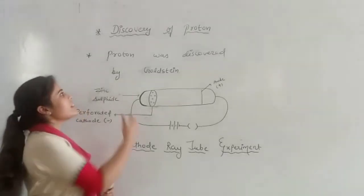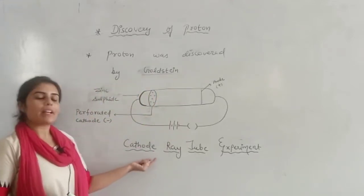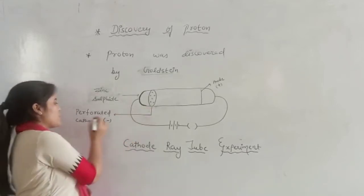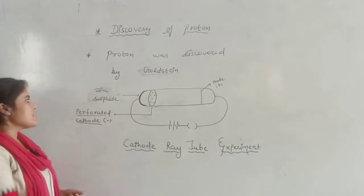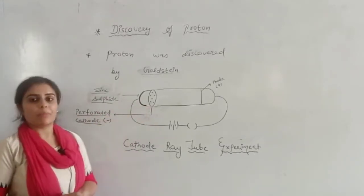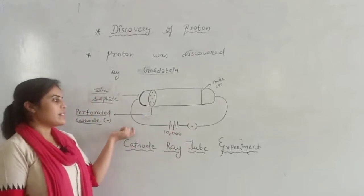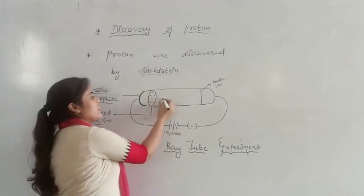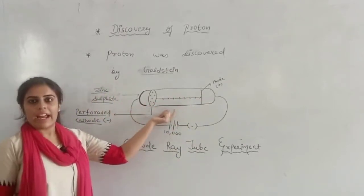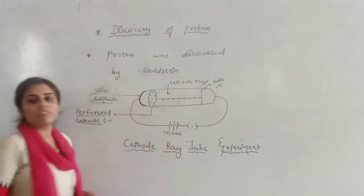Our new topic is the discovery of proton. Proton was discovered by Goldstein. As we read before in the cathode ray tube experiment, the same experiment can be applied for the discovery of the proton, but there is a difference: we use a perforated cathode, and we also use zinc sulfide. When we switch on the battery, there are 10,000 volts, and when the current starts to flow in the circuit, there is a radiation of electrons which move from cathode to anode — we call these cathode rays.